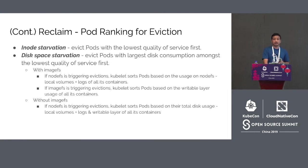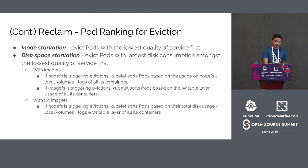Additional criteria apply for disk pressure conditions. If disk pressure is caused by inode starvation, Kubelet evicts pods with the lowest quality of service first. If caused by disk space starvation, Kubelet evicts pods with the largest disk consumption among the lowest quality of service pods first. With imageFS threshold set, if nodeFS triggers eviction, Kubelet sorts pods based on usage on nodeFS — local volumes plus logs of all containers. If imageFS triggers eviction, Kubelet sorts pods based on writable layers of all containers. Without imageFS thresholds set, Kubelet sorts pods based on total disk usage — local volumes plus logs and writable layers of all containers.